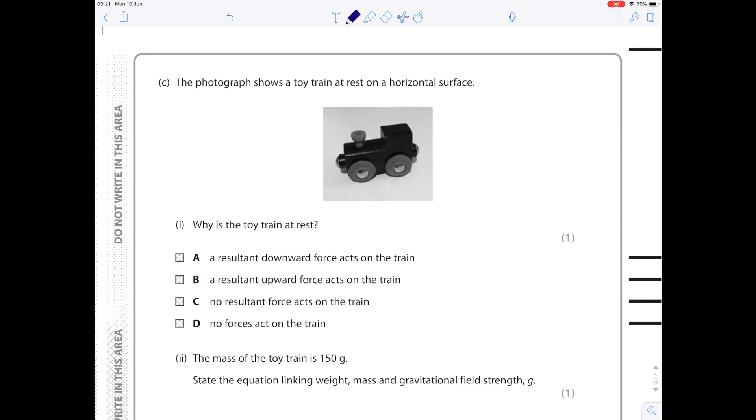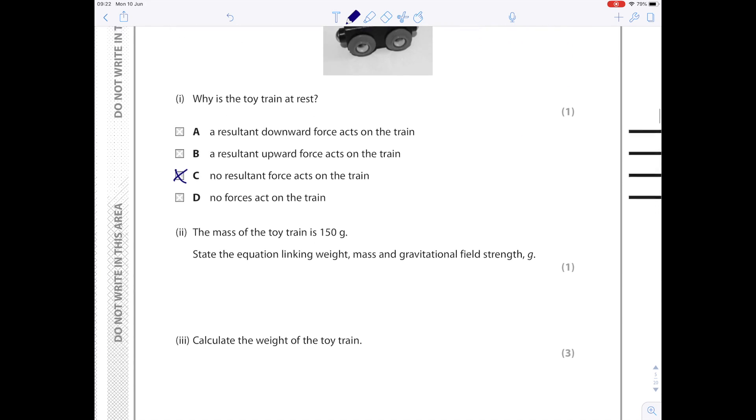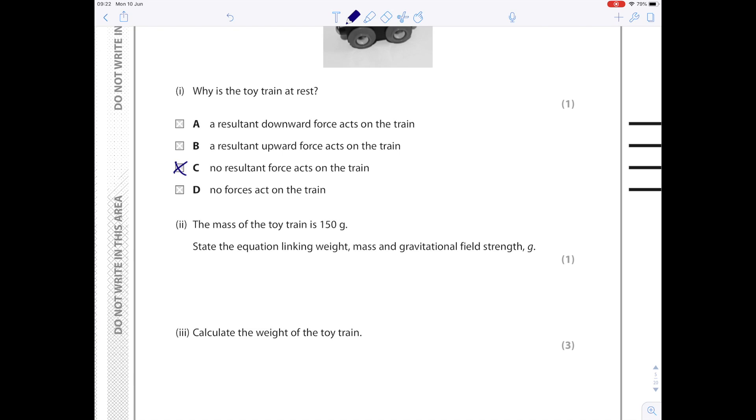The photograph shows a toy train at rest on a horizontal surface. Why is the toy train at rest? It must be at rest because there can be no resultant force. As I look down the answer, I can see that C is the correct answer here.